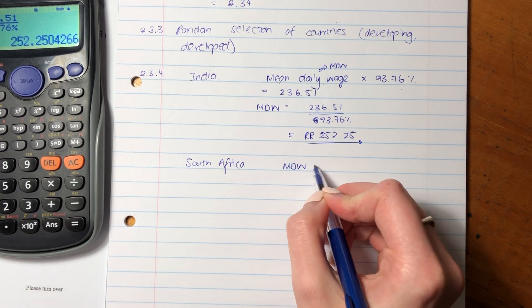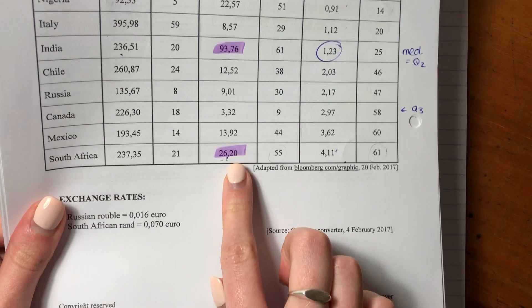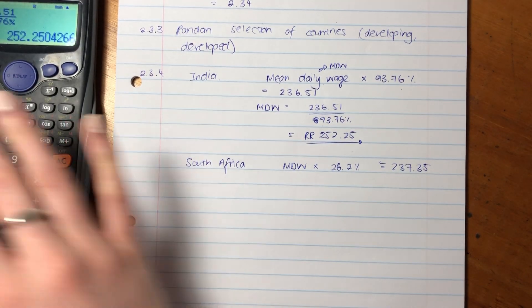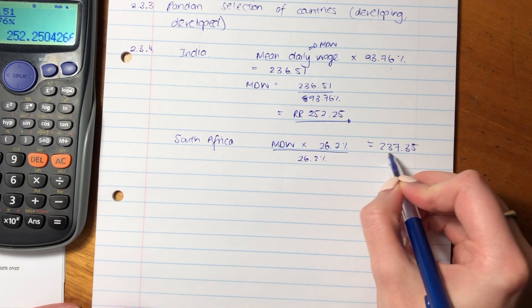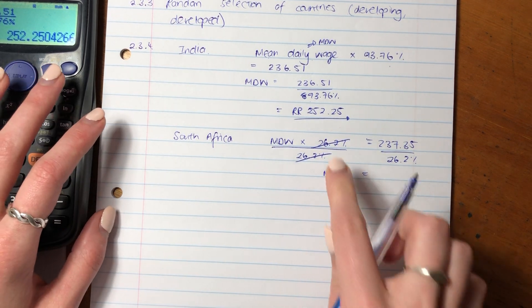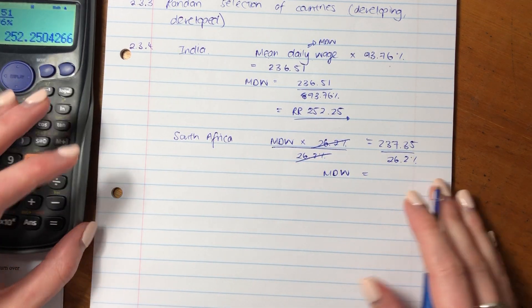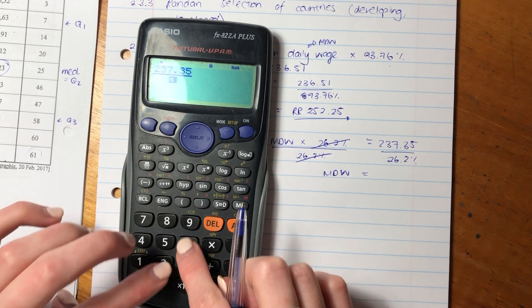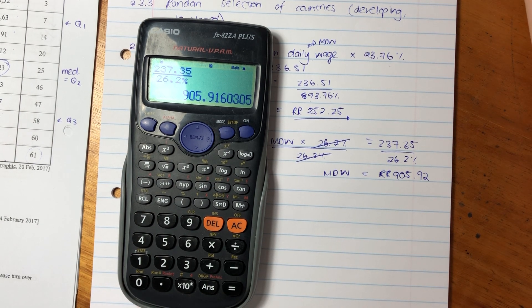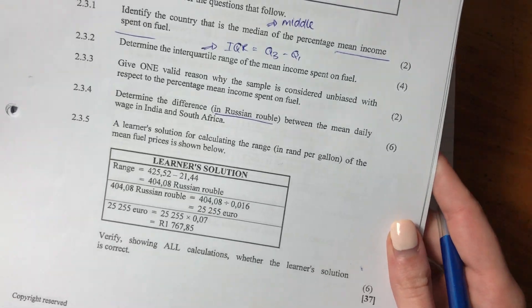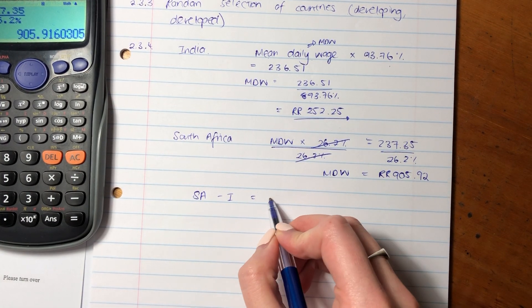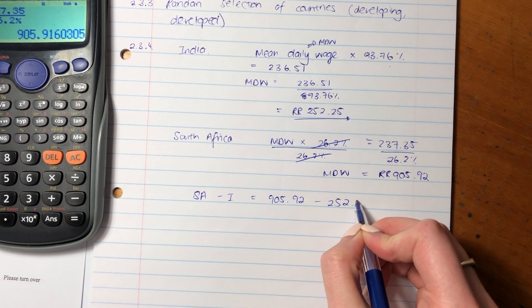So for South Africa, the mean daily wage times by 26.2% equals 237.35 Russian ruble. Now, we want to get rid of this 26.2%. So what I said is you divide through both sides by that percentage, like we did above. Cancels on this side, which just gives us the mean daily wage, because that's dividing by itself. Anything divided by itself is 1. Then we put this into our calculator, 237.35 divided by the percentage, and it gives us 905.92.